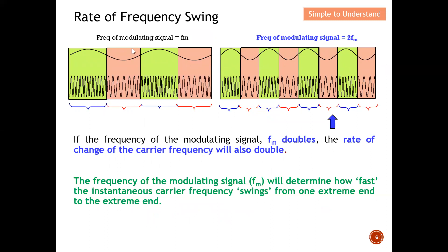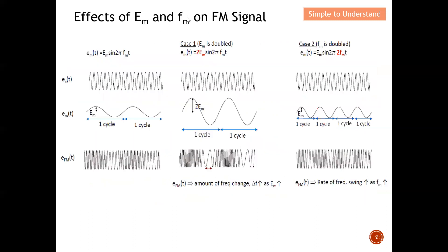Now for the rate of frequency swing: comparing the default case to when the frequency of the modulating signal doubles, you can see the frequencies are much closer together. If the frequency fm doubles, the rate of change of the carrier frequency will also double. The frequency of the modulating signal determines how fast the instantaneous carrier frequency swings from one extreme end to the other, making those changes much faster.